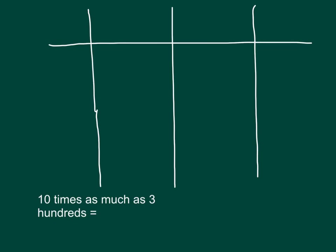Here we have another problem. We're looking at 10 times as much as 3 hundreds. Let's start with a place value chart. You'll notice I'm labeling it a little bit differently this time. It is still ones, tens, hundreds, thousands. I'm writing a number and then an S.